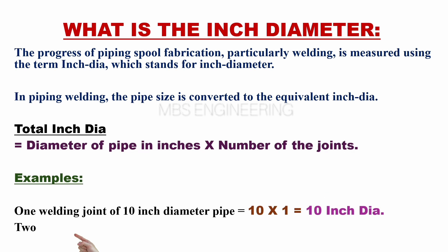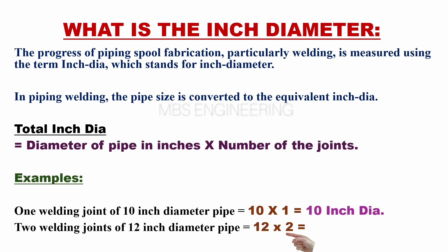To calculate the inch dia for 2 welding joints of a 12-inch diameter pipe: 12 multiplied by 2. Therefore, the total inch dia is 24.